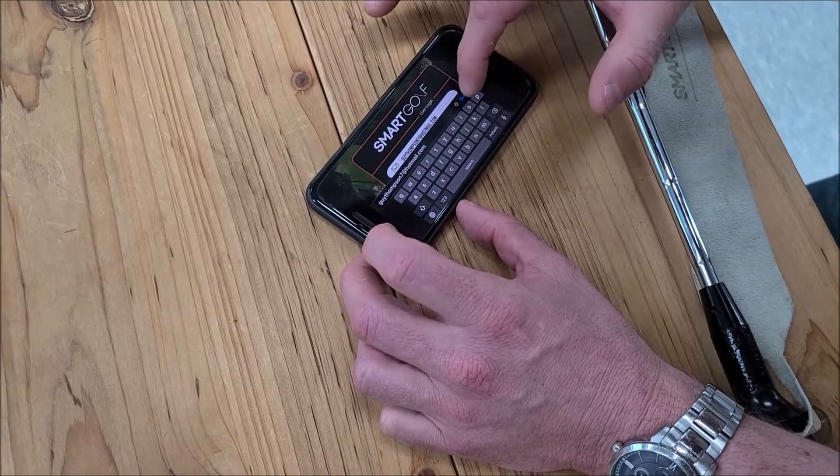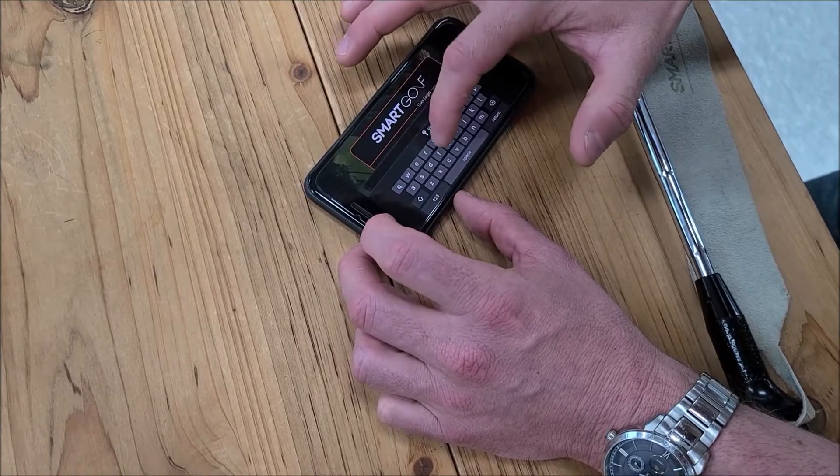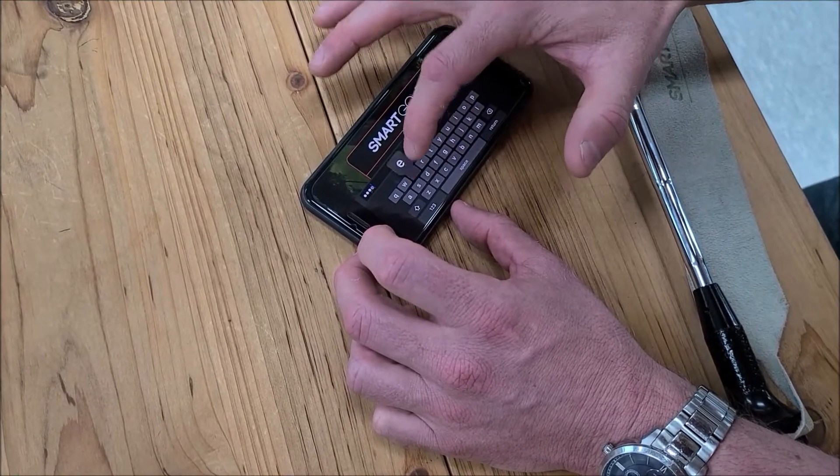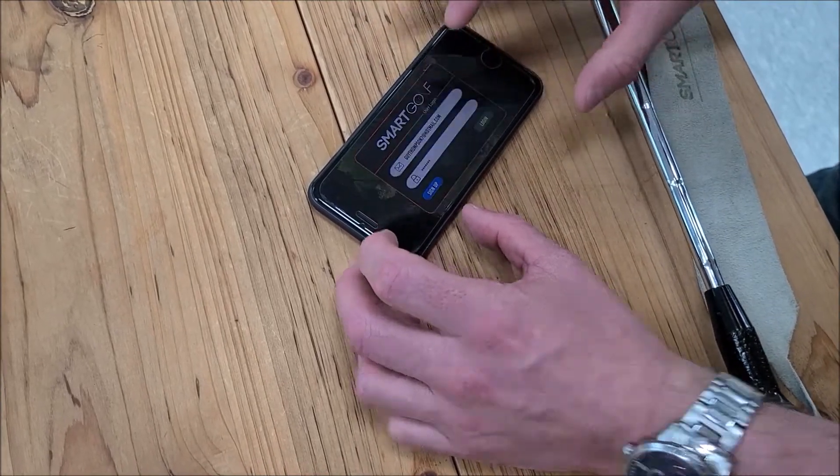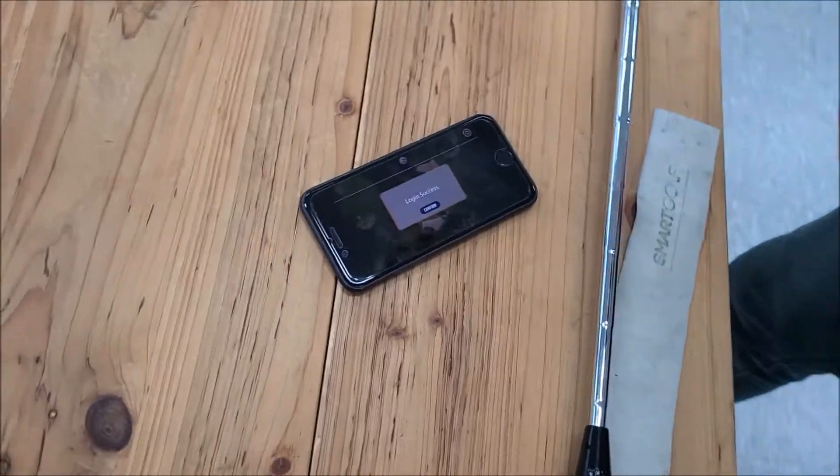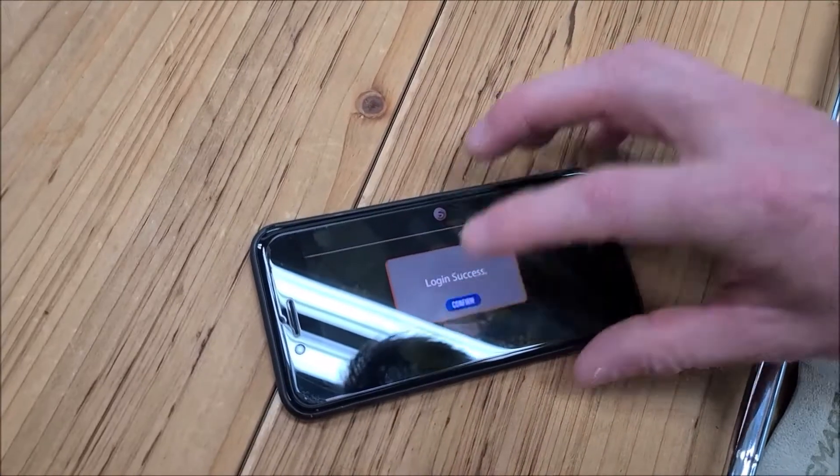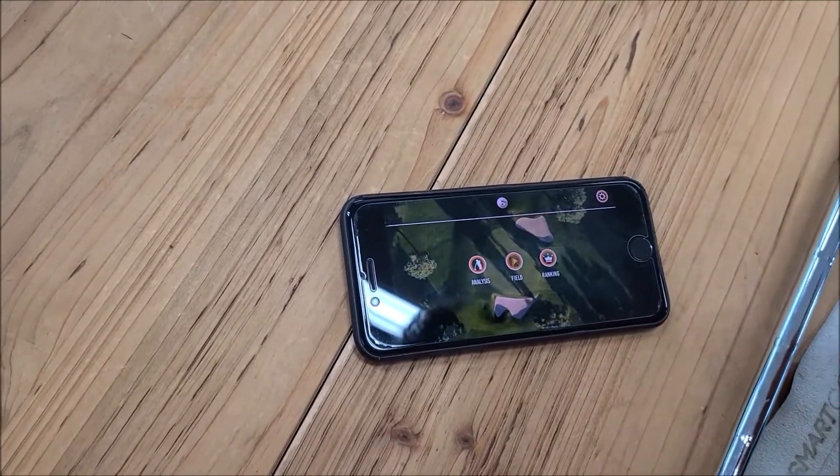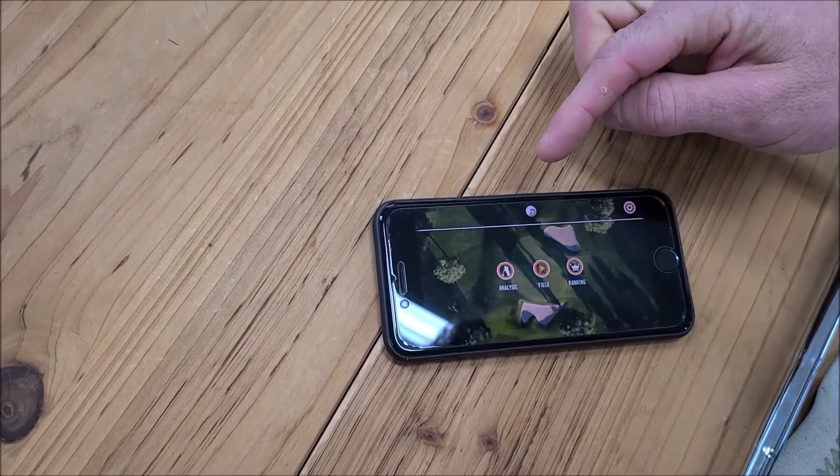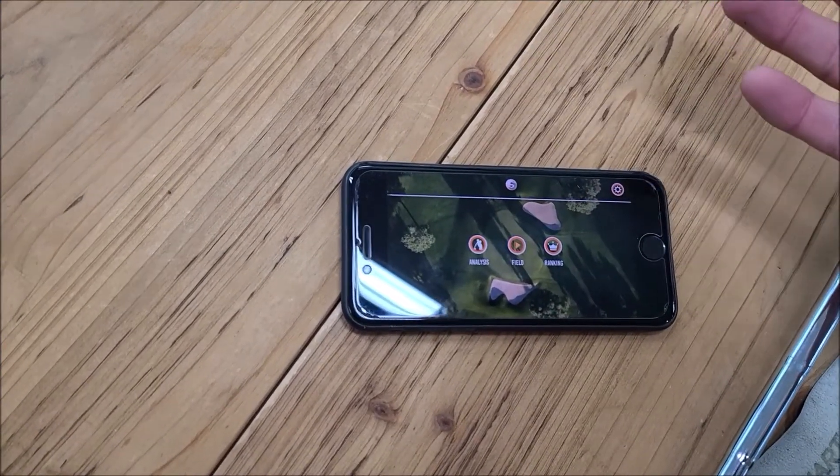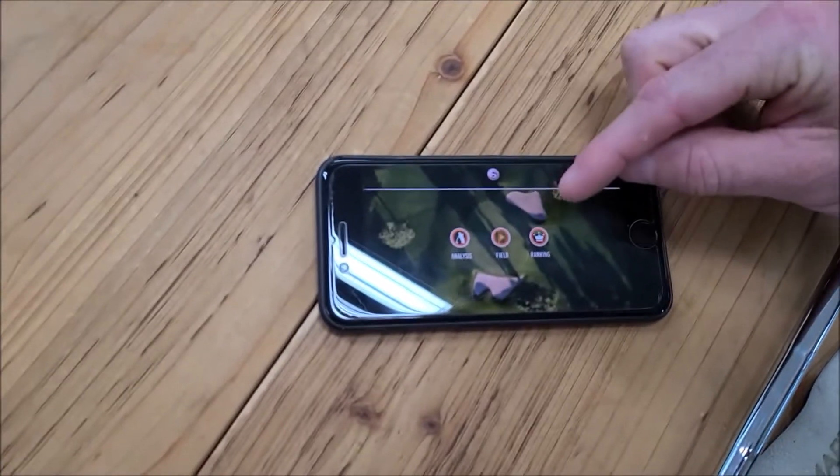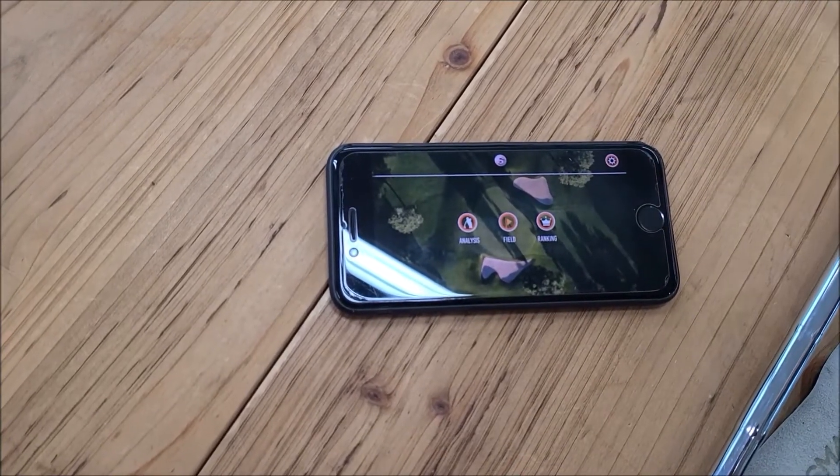Login success. We get to the home page which has our Analysis for analyzing our swing, the Field which is gameplay on the actual course, and the Ranking where we play against other players who also have the Smart Golf app.